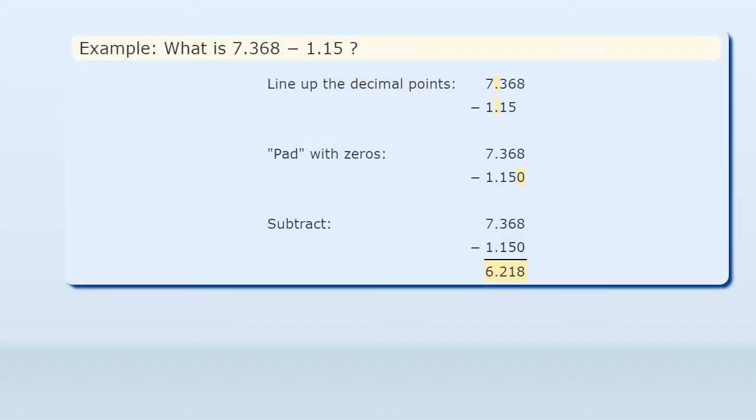Example: what is 7.368 minus 1.15? Line up the decimal points, pad with zeros, then subtract. The answer is 6.218.